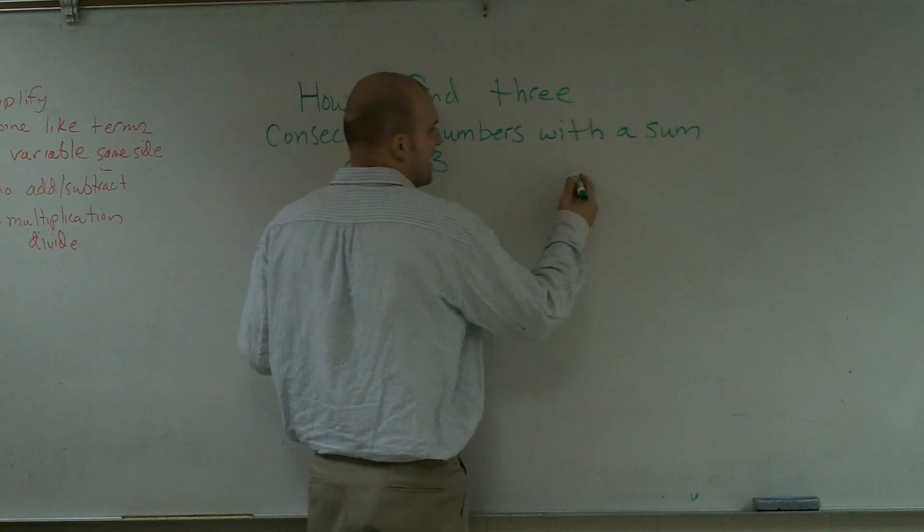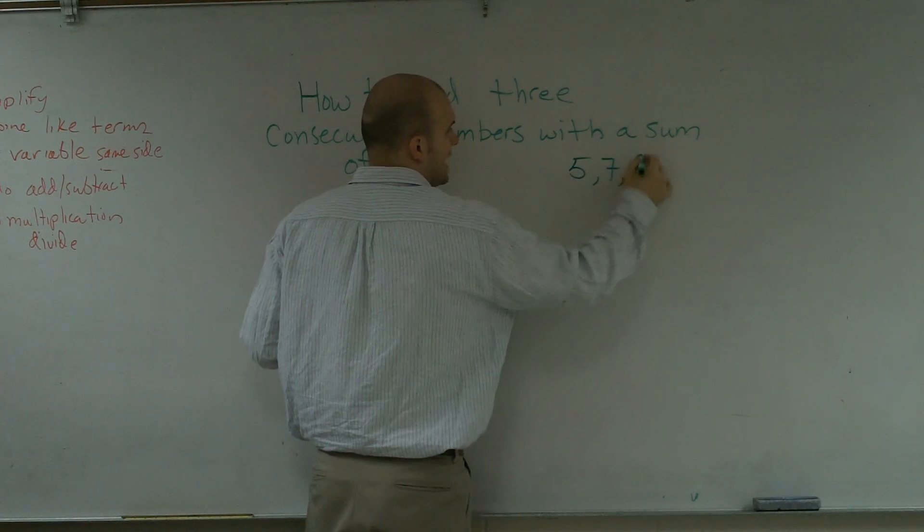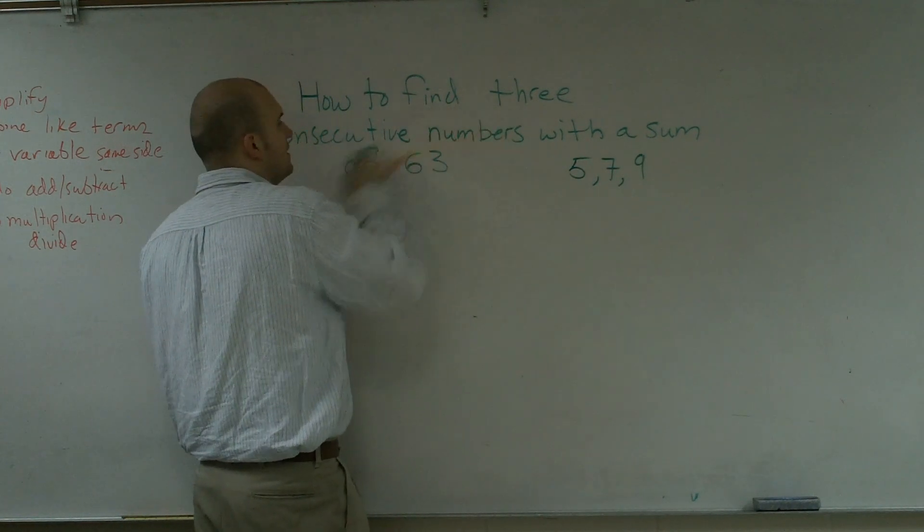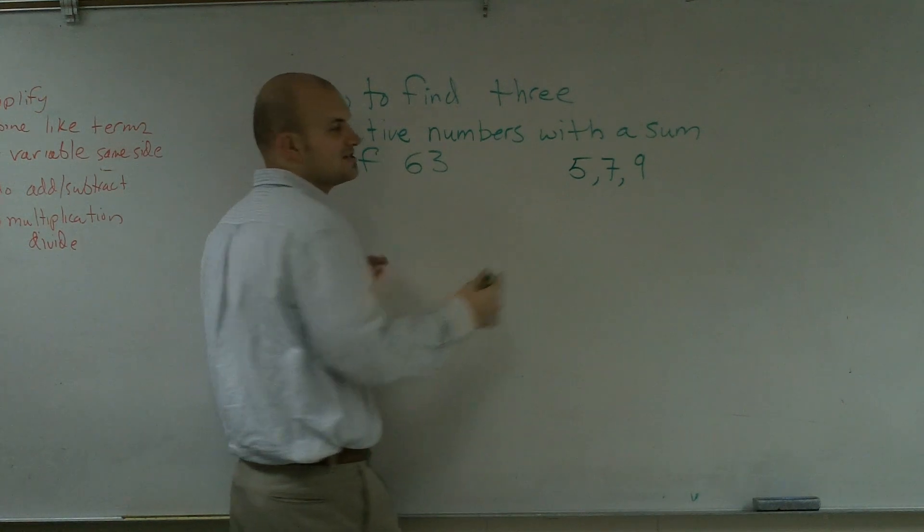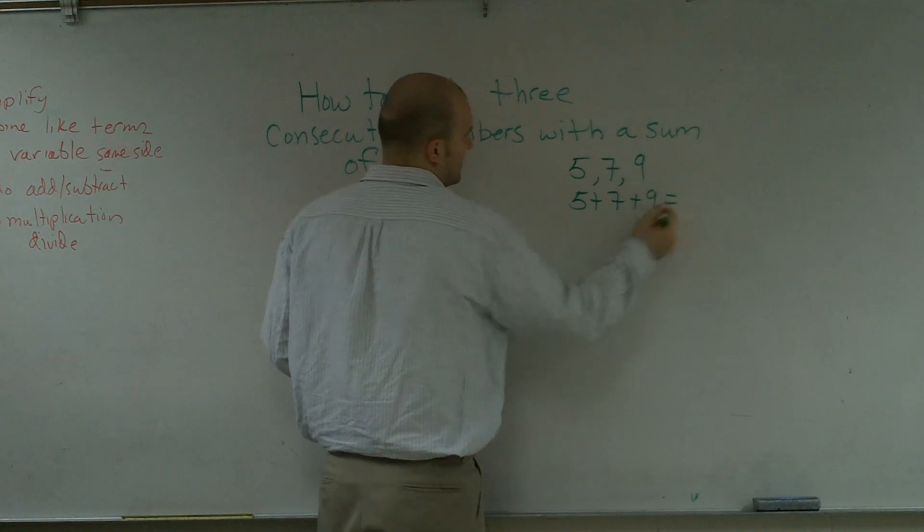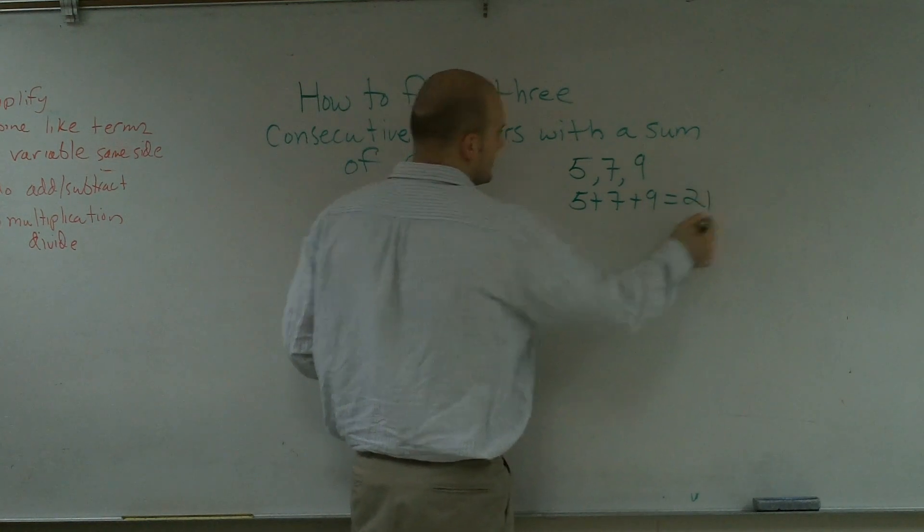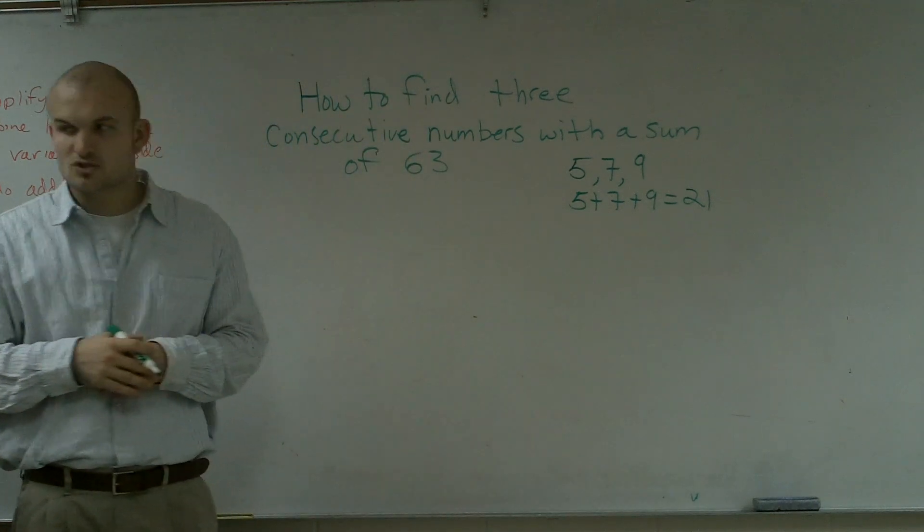So just an example of three consecutive odd numbers would be 5, 7, and 9. However, it says we want the sum, and we know sum by our signal words is going to be to add them. And we also know that is obviously not going to give us 63. The sum of those three consecutive numbers gives us 21.